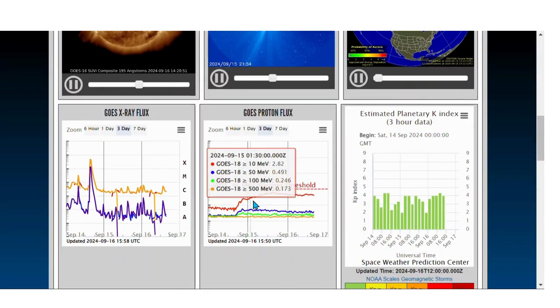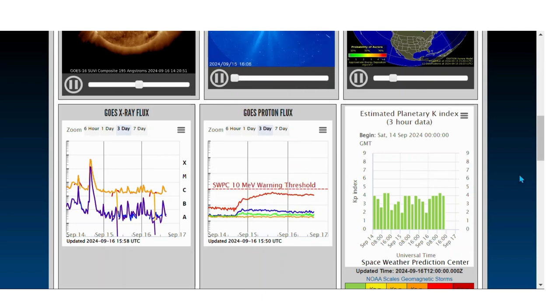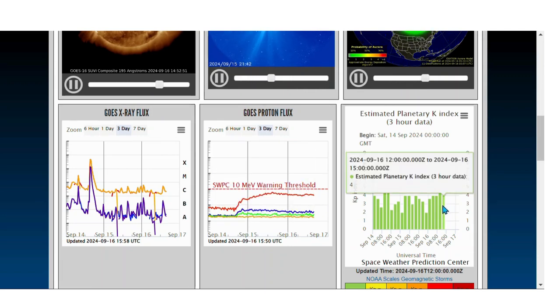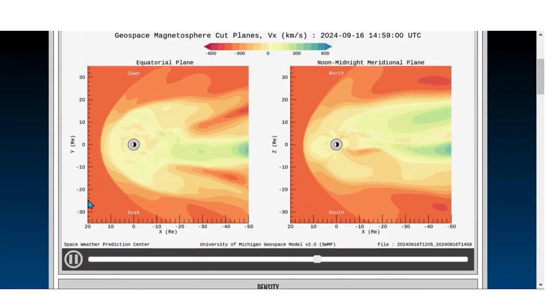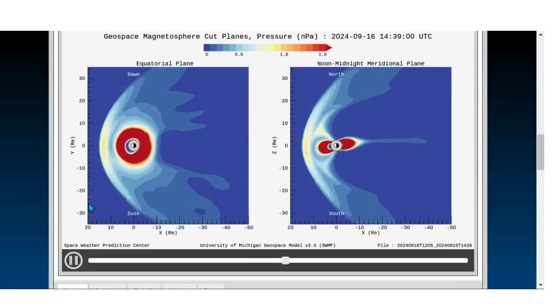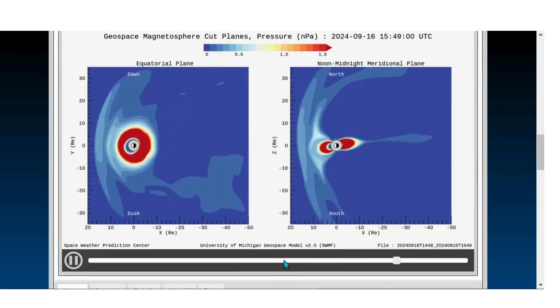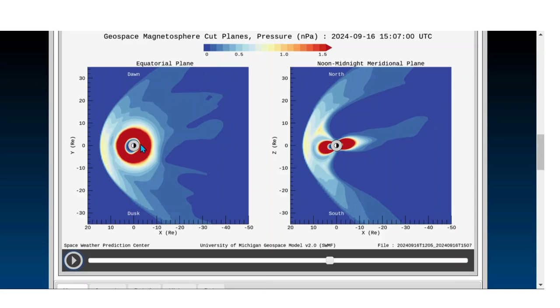We got the proton flux increasing. In other words, energy almost at the warning threshold right here. This is current X-ray looking at magnetic sphere. Movie geospace. Let's see. Looking at the UTC time.